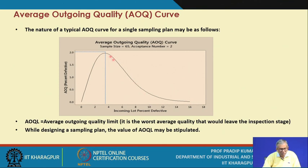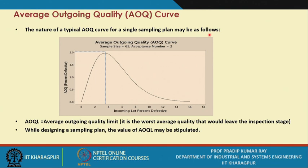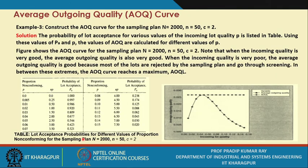When n is significantly less than N, AOQ is approximately PA × P. For different possible values of P, AOQ values can be obtained, and the plot of AOQ versus P is called the AOQ curve. The typical AOQ curve shows AOQ increasing up to a certain level of P, and then decreasing as quality deteriorates. The maximum value of AOQ is referred to as AOQL — the average outgoing quality limit — which is the worst average quality that would leave the inspection stage.